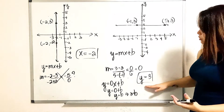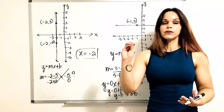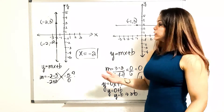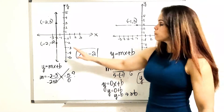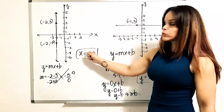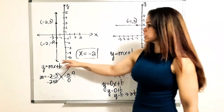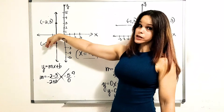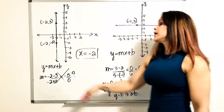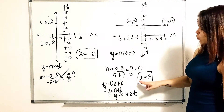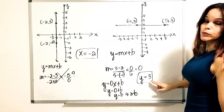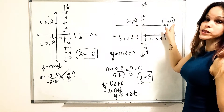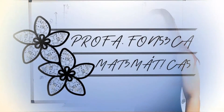So hopefully this helps. For the vertical line, it's x equal to something, which is going to be the value that repeats in the x-coordinate. And for the horizontal line, it's going to be y equal to something, which is going to be the value that always repeats in the y-coordinate.